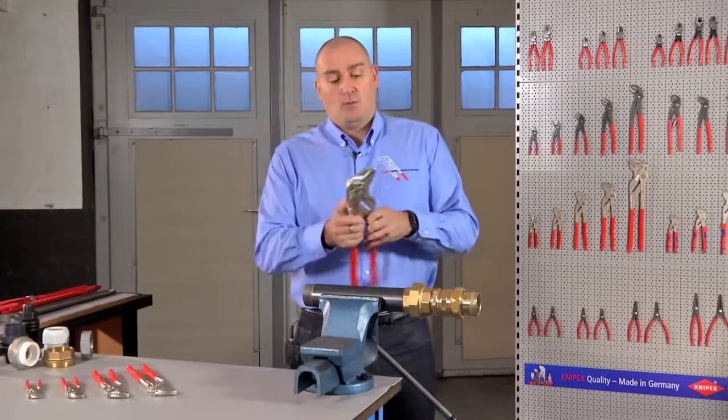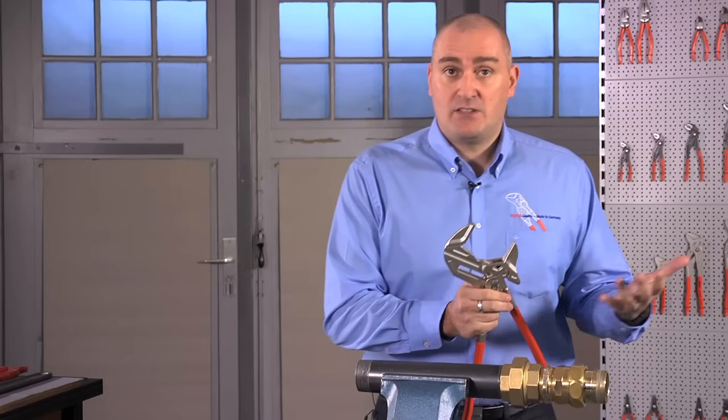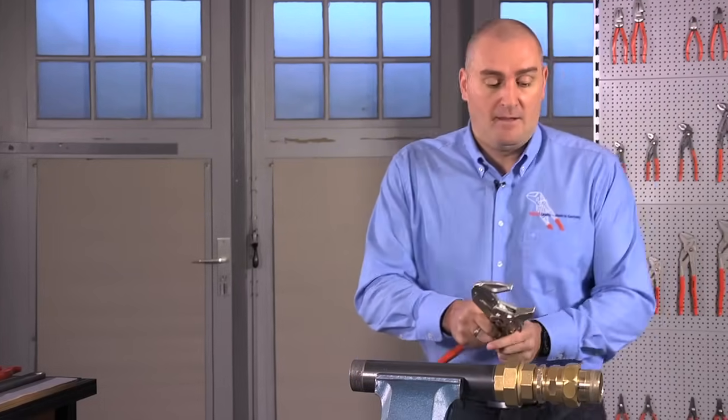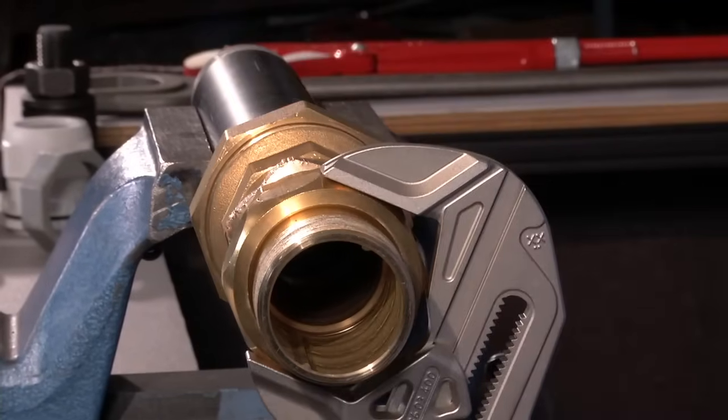The pliers wrench with its perfectly straight and flat jaws eliminates any risk of damage to the piece that you're working on. As you can see, once you apply the tool to the piece, squeeze down on the handles, you get a perfect fit because of the way that the parallel jaws grip the work piece.